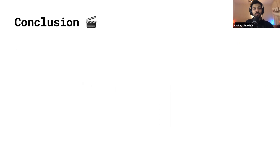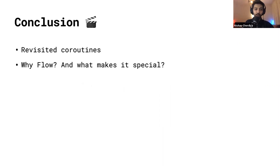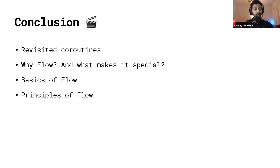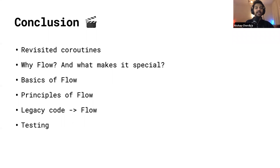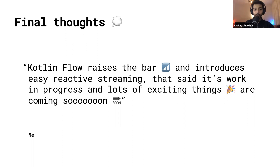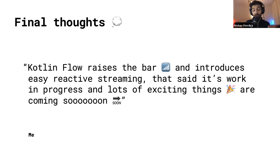To conclude, here's a quick summary of what we covered today: We revisited coroutines. We saw why Kotlin Flow came into picture and what makes it special. We covered the basics of flow — the emitter and collector and how they work internally. We saw the principles of flow: context preservation and exception transparency, and how they make our lives easier. We saw how to convert from legacy code or RxJava to Flow, how to test flows, and some pro tips along the way. Kotlin Flow raises the bar, makes reactive programming easy, and gives us great Kotlin features. It's production ready, though still work in progress with exciting things coming.